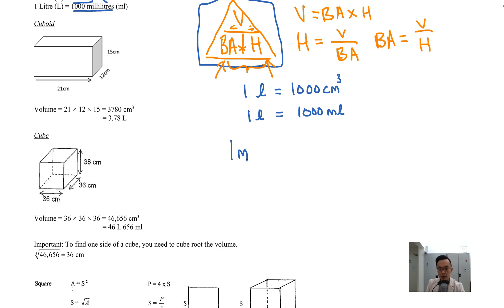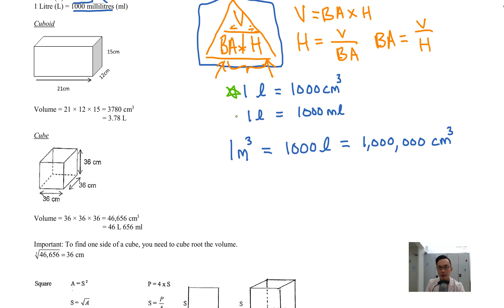One cubic meter equals 1,000 liters, which equals 1,000,000 cm³. So these are very, very important things that you need to remember: one liter equals 1,000 cm³, one liter equals 1,000 milliliters, and one cubic meter equals 1,000 liters.